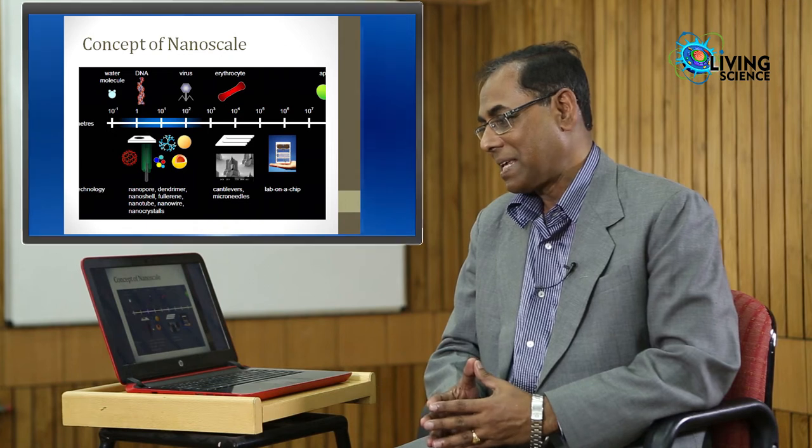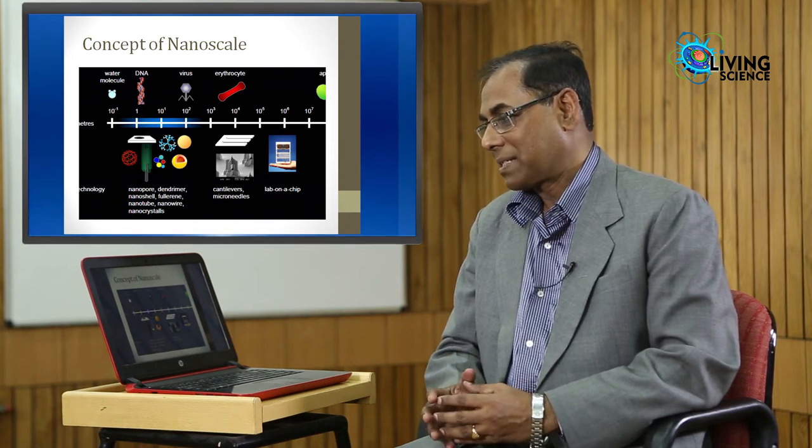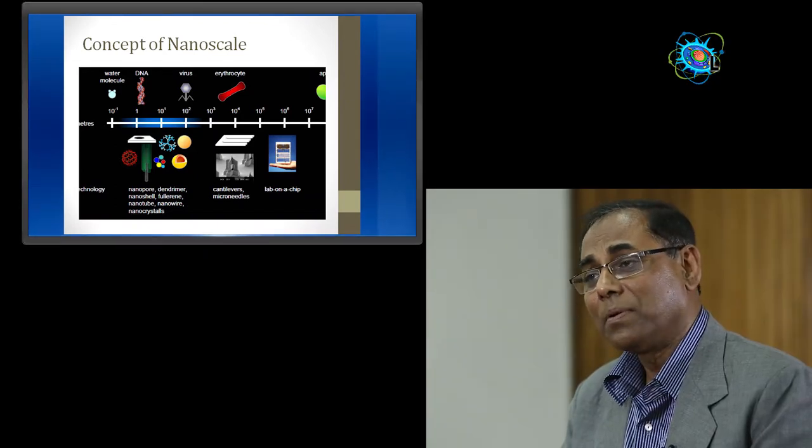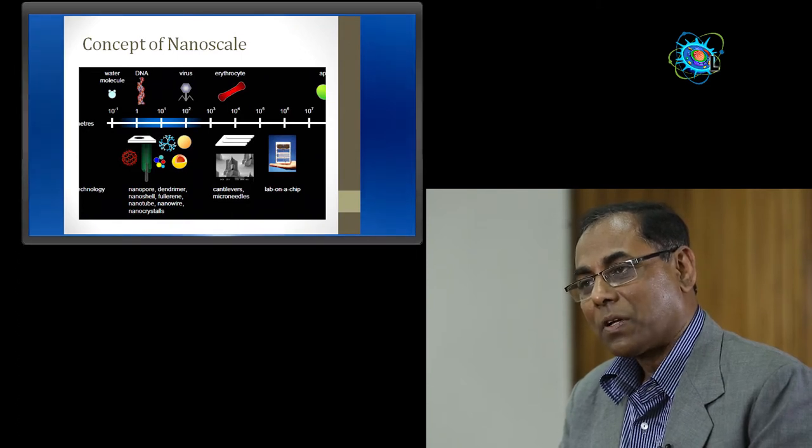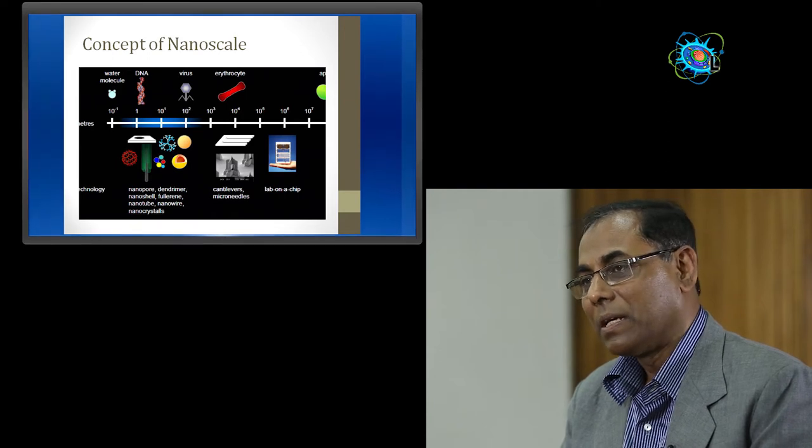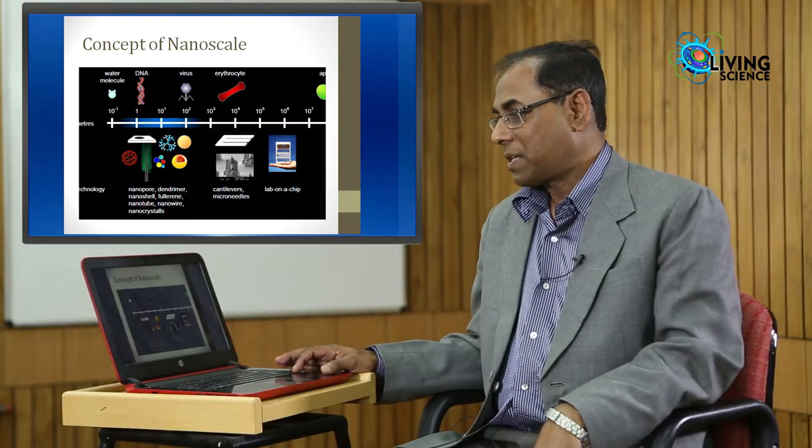In this figure, you can see different macro objects, micro objects, and nano objects. The virus is a typical example because usually we handle nanomaterials in the dimension of 100 nanometers for different in vivo use inside the body. That is the virus dimension.